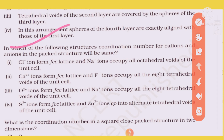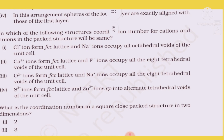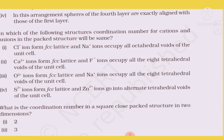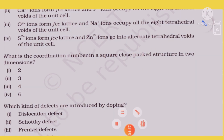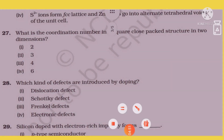In which structure are the coordination numbers for cation and anion the same? When cations occupy the FCC lattice and anions occupy all octahedral voids, coordination numbers become equal. In square close packing, the coordination number is 4.